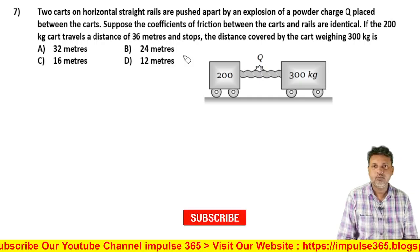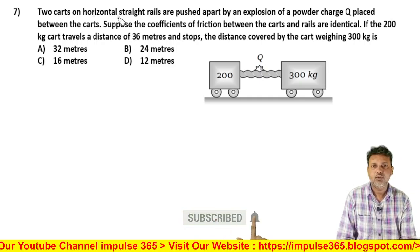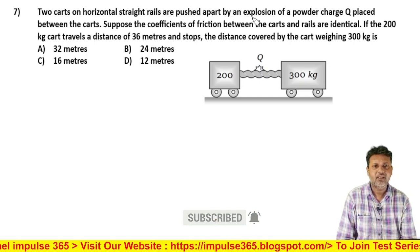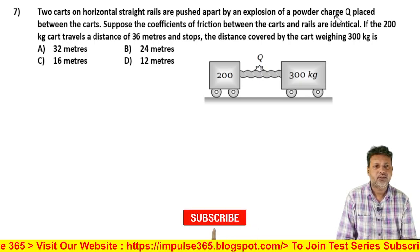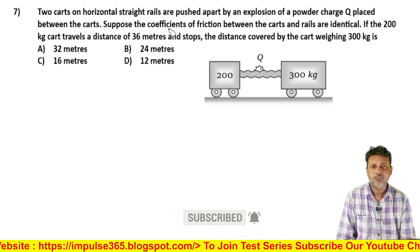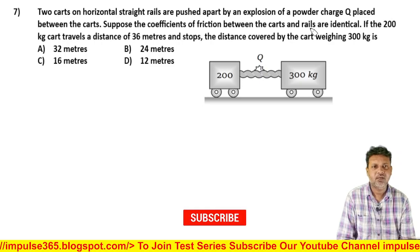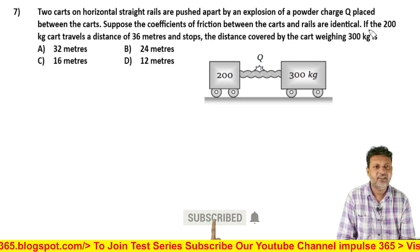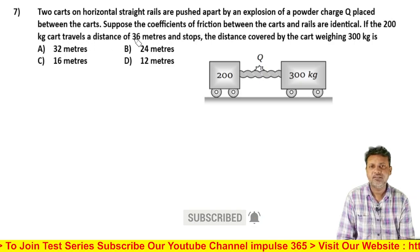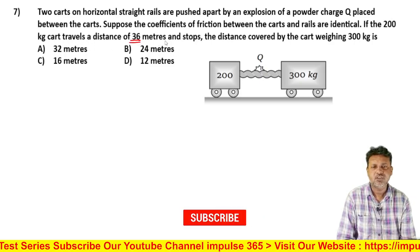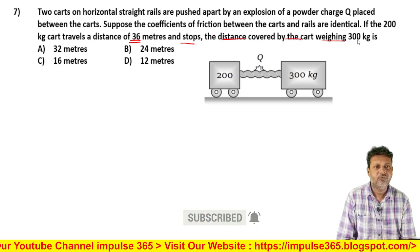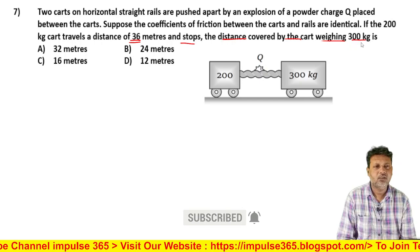Now, what is the question? Two carts on horizontal straight rails are pushed apart by an explosion of a powder charge placed between the carts. Suppose the coefficients of friction between the carts and rails are identical. If the 200 kg cart travels a distance of 36 meters and stops, what is the distance covered by the cart weighing 300 kg?